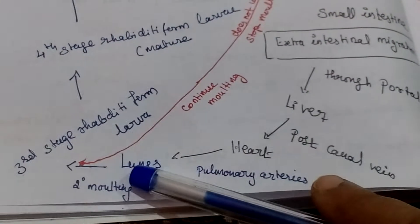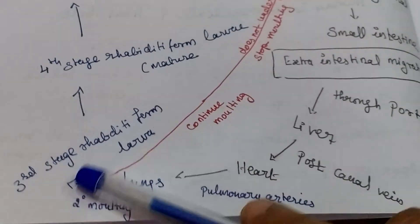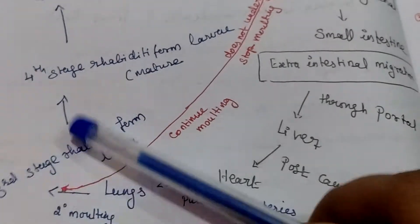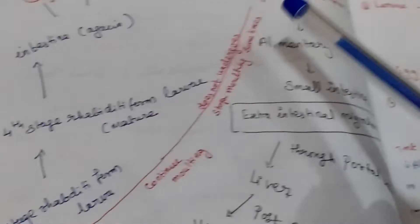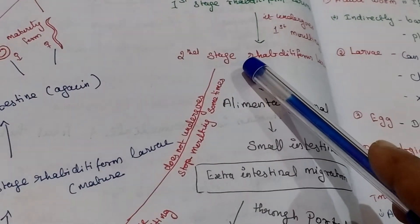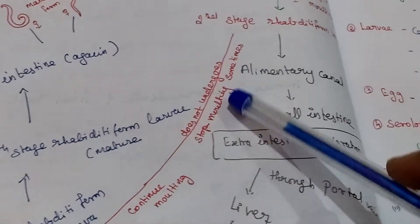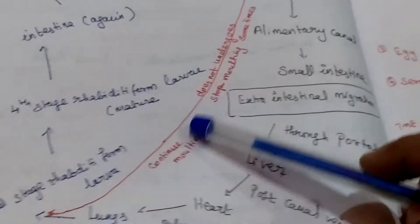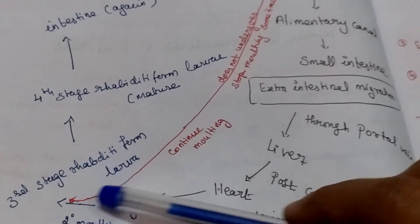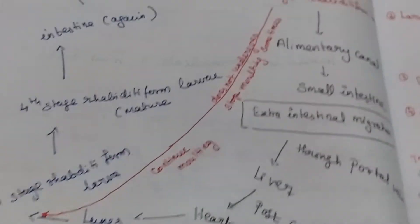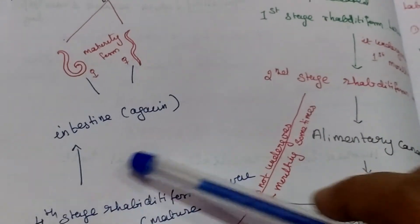After second molting, it develops into third stage rhabditiform larva, then enters fourth stage rhabditiform form. Here some second stage, some larvae stay molting. After that it continues, then comes again here. It also develops third stage. Fourth stage is maturity form.